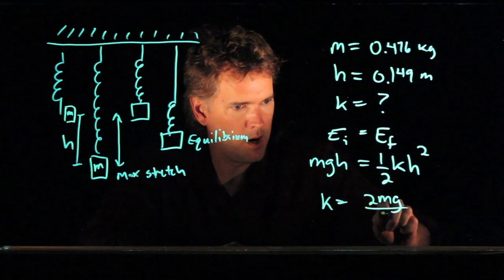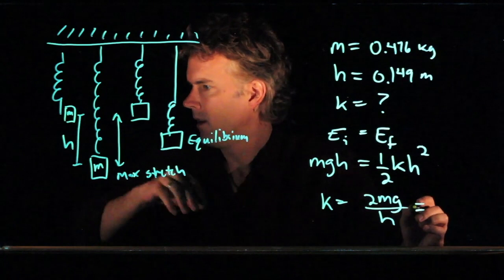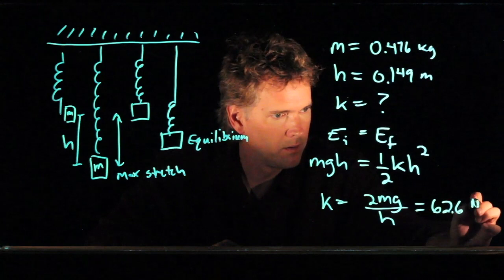And then we had an h, but we're going to divide by an h squared. And so we get an h in the denominator. And if you plug in those numbers, you should get 62.6 newtons per meter.